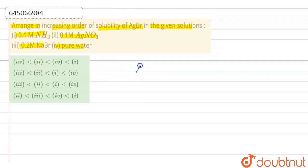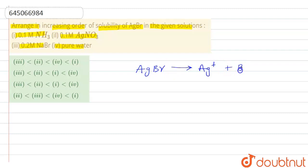AgBr will dissociate into its ion form: it will give Ag⁺ along with Br⁻ ions.